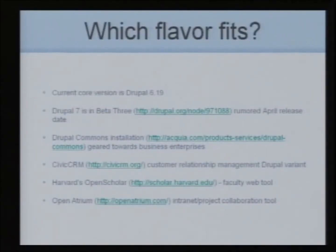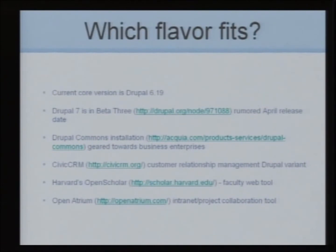There are a couple of different flavors besides the normal core. The current version is 6.19. Drupal 7, which has increased features and capacity for more semantic-based stuff and RDFa implementations, is in beta 3 — it's been rumored to release but it is closing in. Drupal Commons is a relatively new installation geared towards business enterprises as a social enterprise system — it's plain vanilla with sparse theming so a company can create its own theme and website.